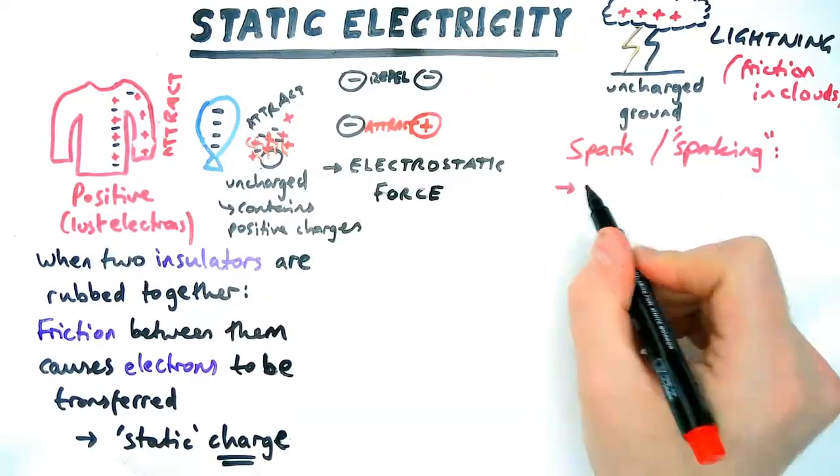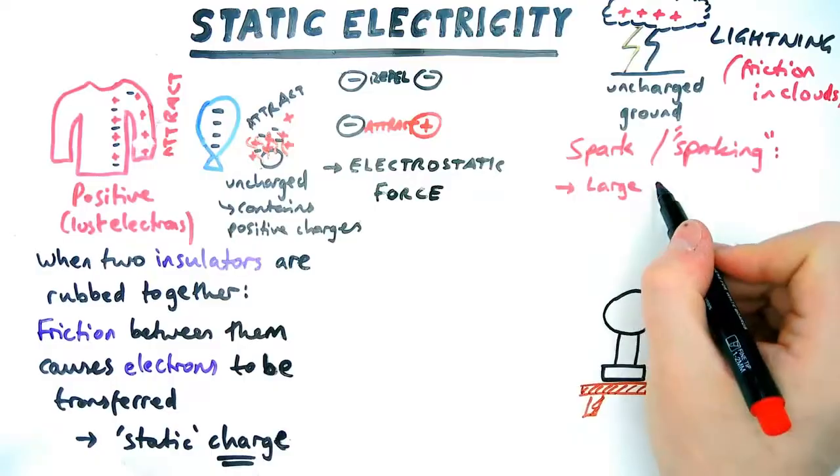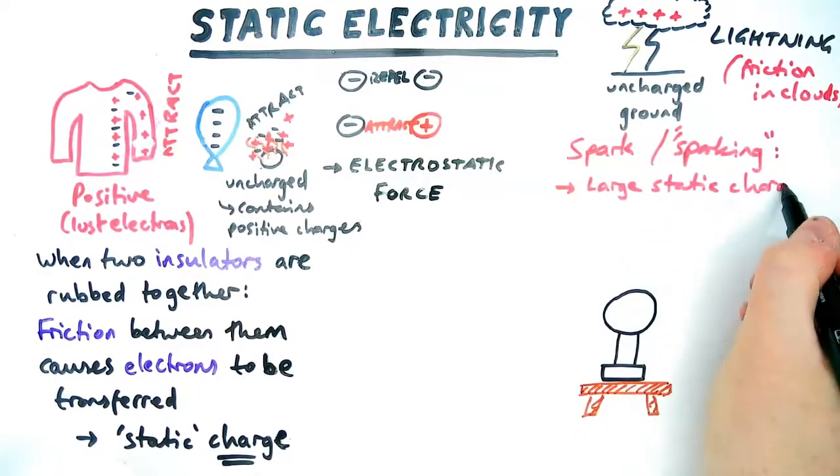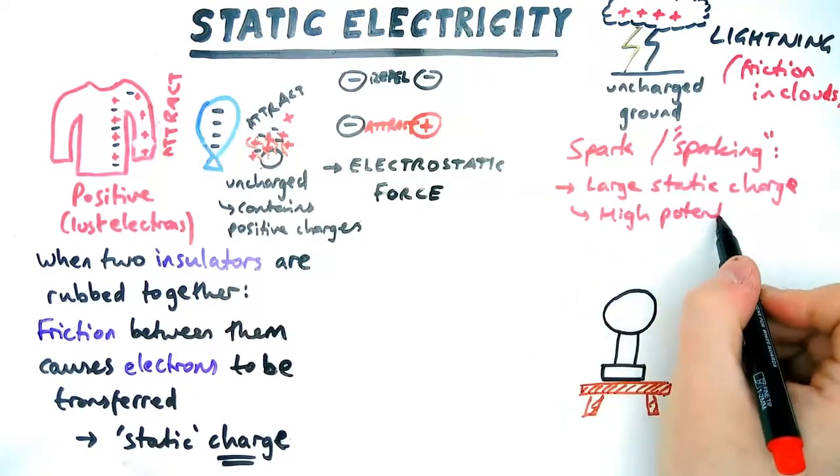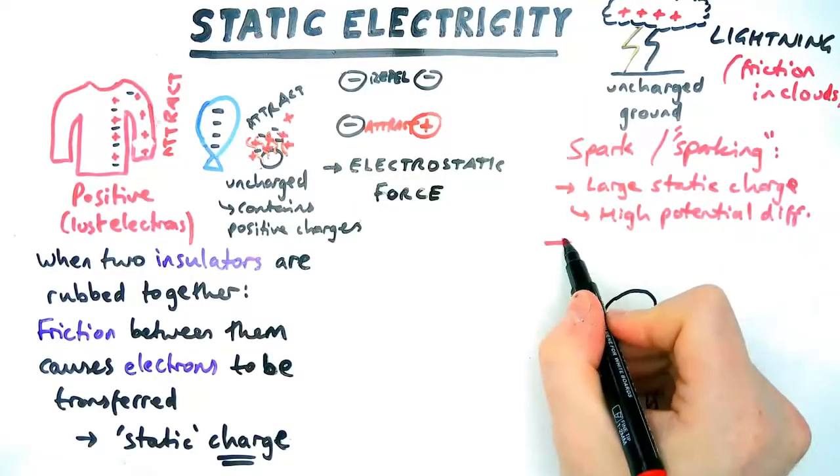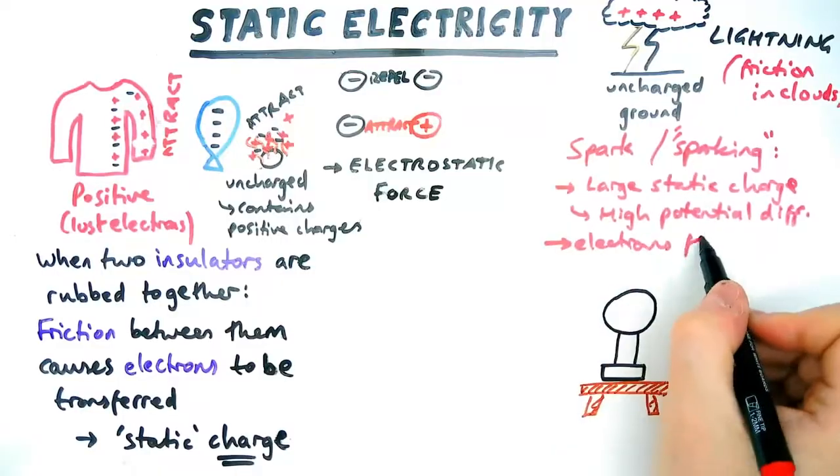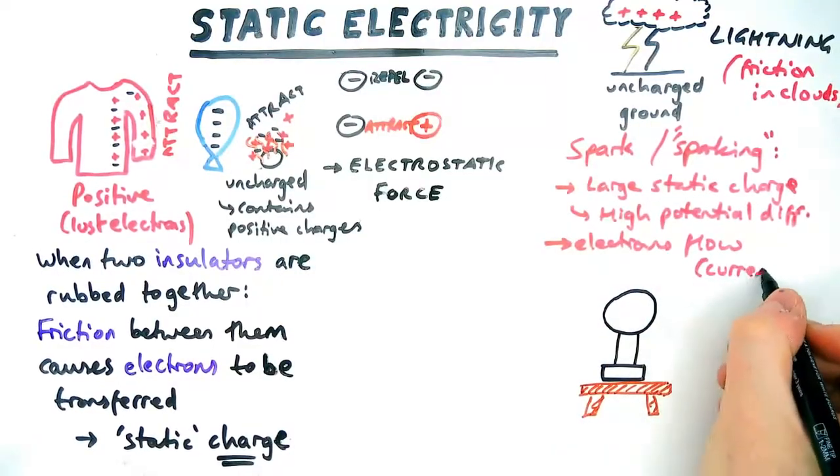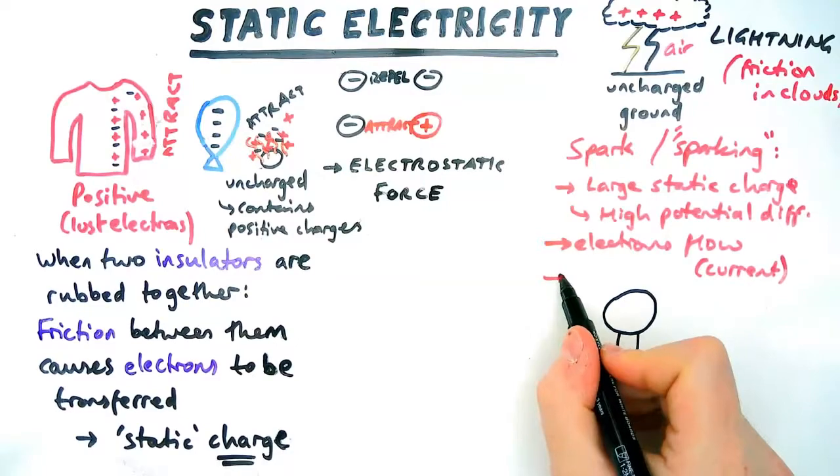And lightning is an example of a spark or a sparking effect. Well, that happens when there is a large static charge, in this case in the cloud, which leads to a high potential difference. Now, the high potential difference causes electrons to flow or electrons to move, which we know as electric current. In this case, they flow through the air.